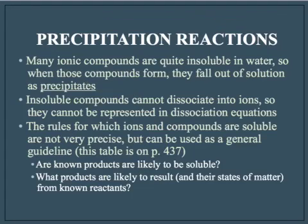Ionic compounds are all made of a metal and a non-metal and have positive and negative particles, but there are quite a few ionic compounds that are not soluble in water. When they form from a chemical reaction, their density causes them to fall to the bottom of the solution — they're more dense than the water in which the reaction is taking place — and so you see them as a precipitate.